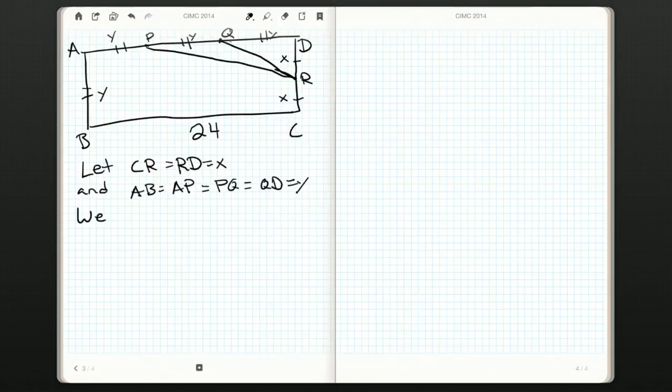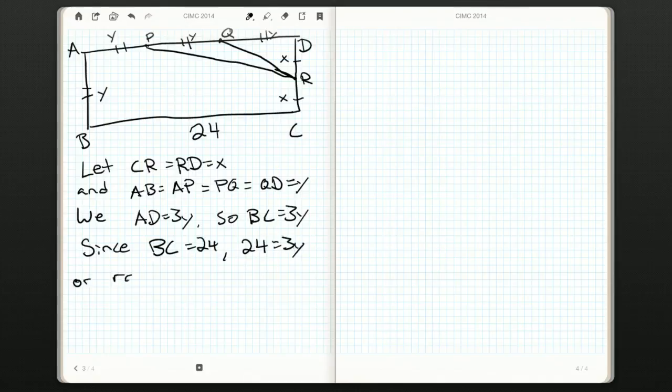We can quickly see that 3Y is the length of AD. Since this is a rectangle, we know that AD is equal to BC, so 3Y equals 24. We can quickly rearrange and find that Y is equal to 8.